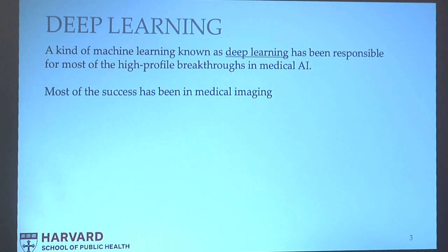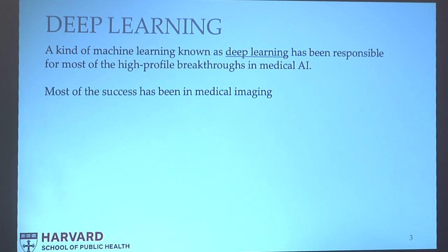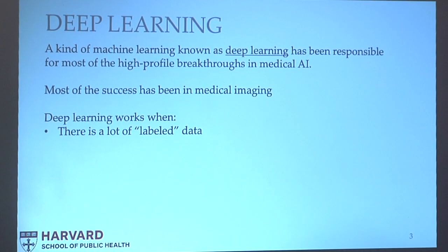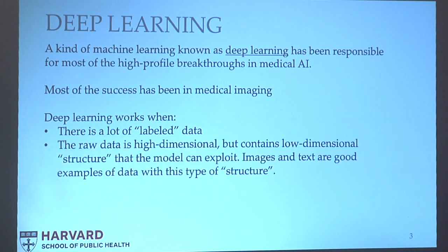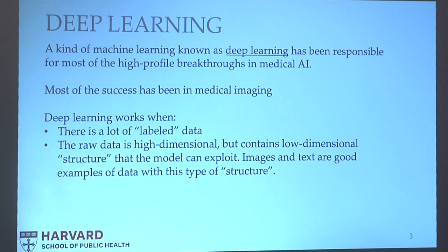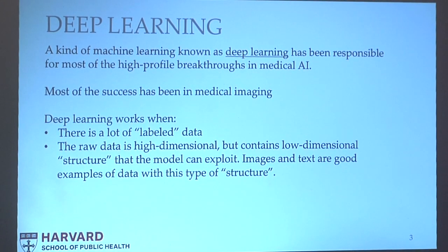Not only does AI mean machine learning today, it actually means a very specific kind of machine learning known as deep learning. Deep learning — I don't have time to go into the technical details — but it's a type of machine learning that's loosely modeled after how the brain works. Most of the success in medical AI has come in medical imaging through the application of deep learning. Deep learning works when you have a lot of labeled data, and it needs data that is high dimensional but actually has some type of low dimensional structure. Images and text are good examples of high dimensional data that contain this low dimensional structure that the deep neural net can extract.